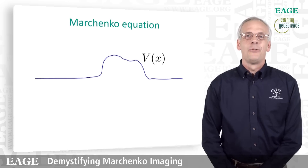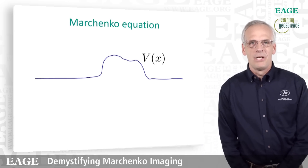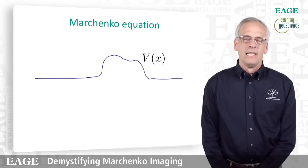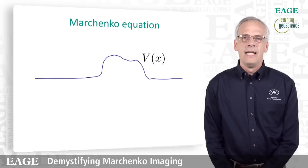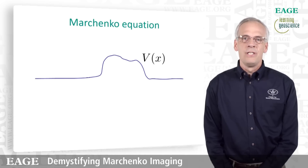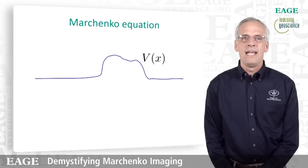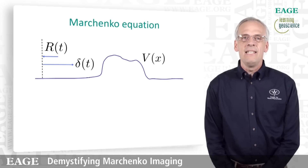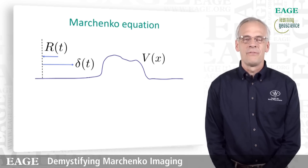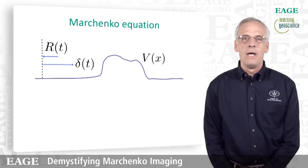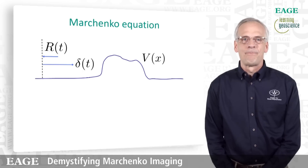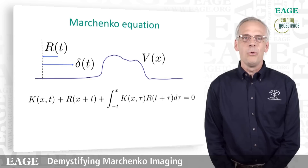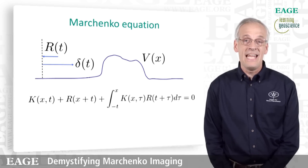Let me first take you back to the 1950s. This was when Marchenko developed his inverse scattering theory. He wasn't interested in seismics — he was interested in quantum mechanics. He worked on the following problem: suppose we have a certain quantum mechanical potential V of x. We send in a delta function from the left, we record the reflected waves, and our job is to reconstruct the unknown potential given the reflectivity R of t. There is a very simple closed-form solution for this problem, and the solution is exact.